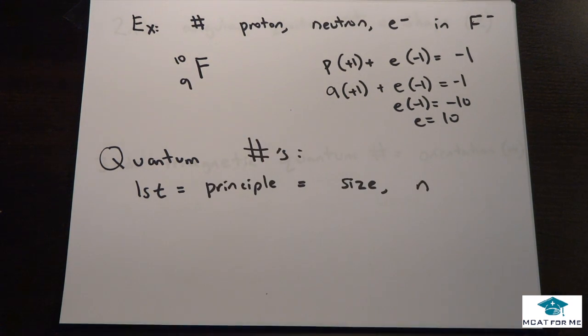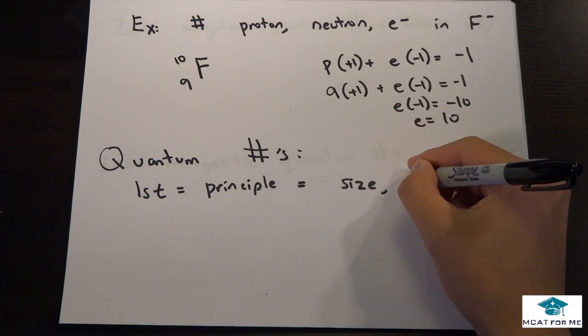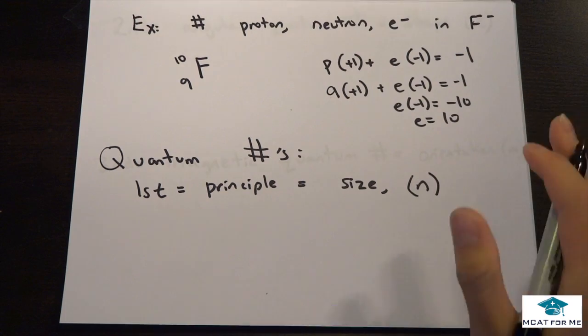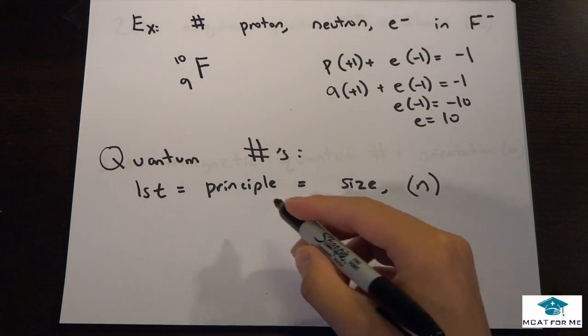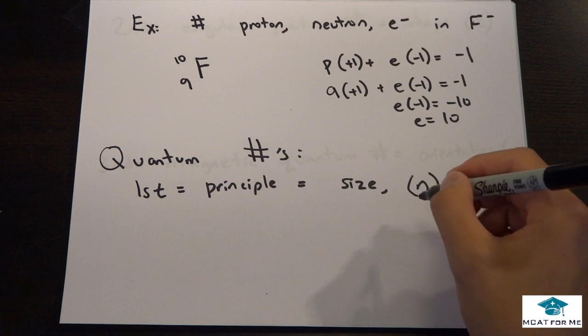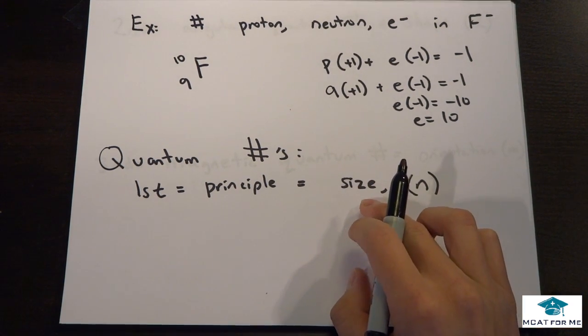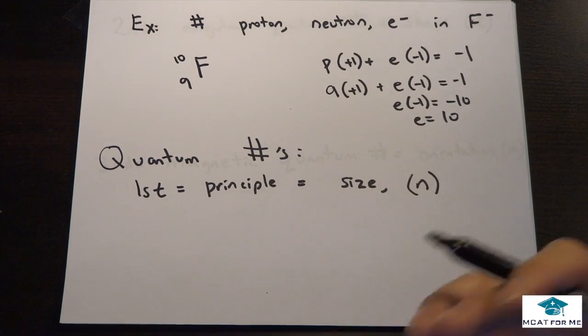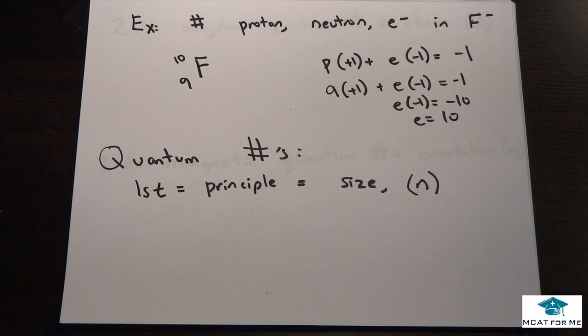So the first one is the principal quantum number, and it's dependent on the size, and we define this as n. So you may see any type of them on the MCAT. You may see them name it as principal quantum number, as n. They won't necessarily call it the size. They may say, what does this measure, and you say, oh, the size or the energy level.